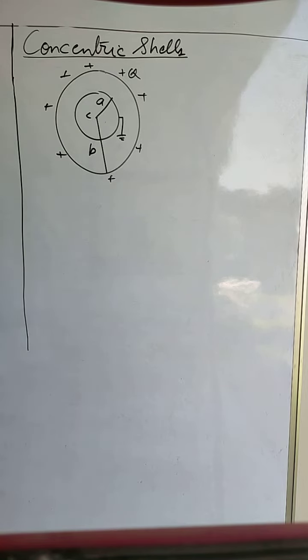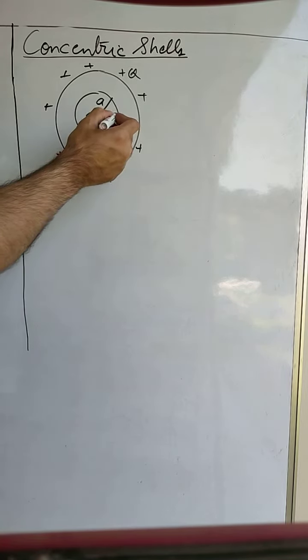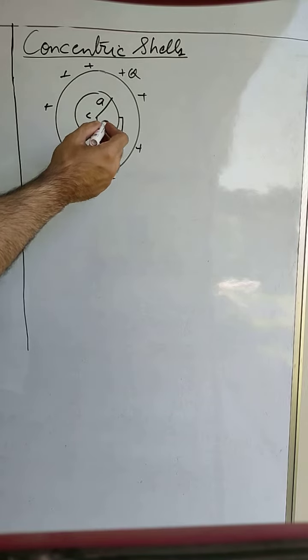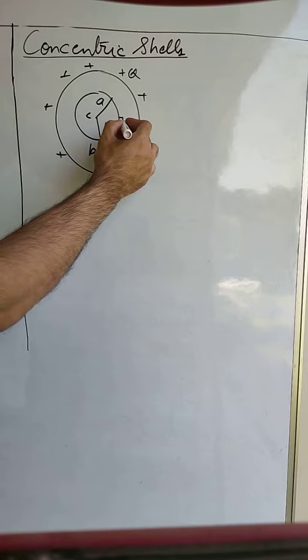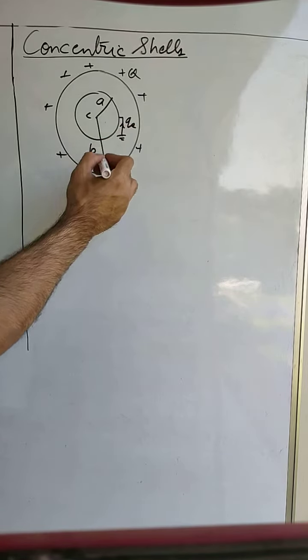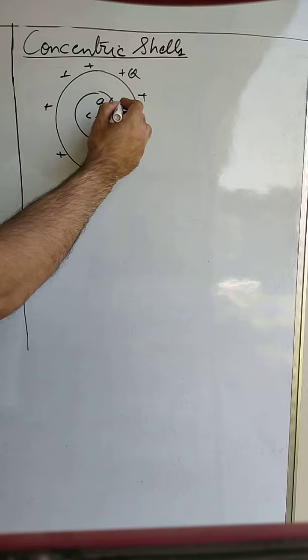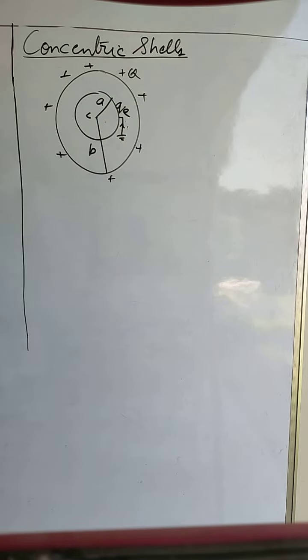Now what will happen when this inner shell is connected to the earth? The potential on the inner shell will be equal to 0 because of the flow of the charge QE. So this QE will be deposited on the inner shell so as to make the potential equal to 0.